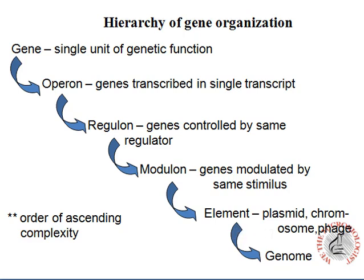Then comes the element level — what is present inside the bacteria: plasmid, chromosome, and phage. A plasmid is an extrachromosomal DNA, the chromosome contains the genetic content for the bacterium itself, and the phage is the invading phage's DNA incorporated into the chromosome. This total set is known as the genome.